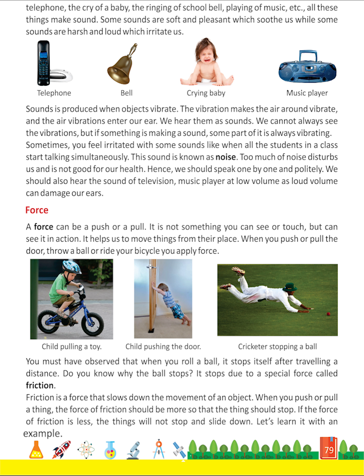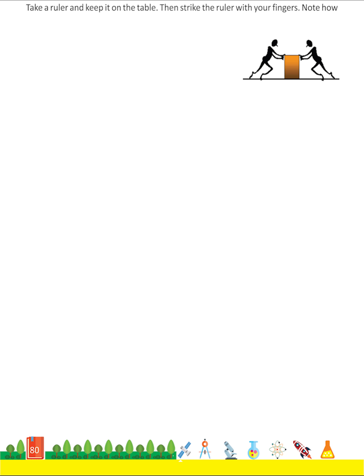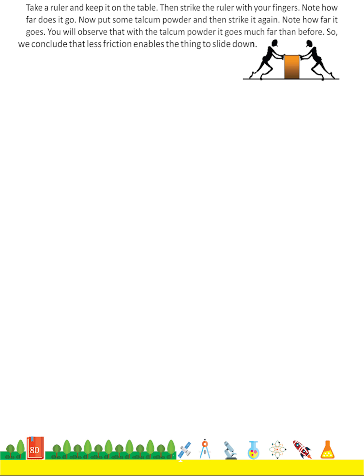Let's learn it with an example. Take a ruler and keep it on the table, then strike the ruler with your fingers and note how far it goes. Now put some talcum powder and then strike it again — note how far it goes. You will observe that with the talcum powder it goes much farther than before. So we conclude that less friction enables the thing to slide farther.